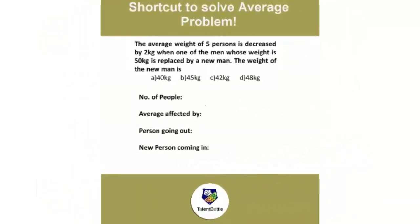Replacement problems in average can be solved within seconds. The average weight of 5 persons is decreased by 2 kg when one of the men whose weight is 50 kg is replaced by a new man. The weight of new man is: So first note down the number of people, they are 5. Average is decreased by 2, so I will write here minus 2. Weight of old man or the person going out is 50 kg. The new person coming in will have weight 50. Just I have to multiply number of people into average affected by. So 5 into minus 2 will be minus 10. So I can just subtract minus 10. So the weight of new man is 40 kg.